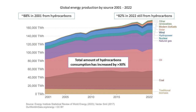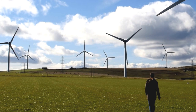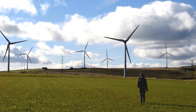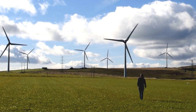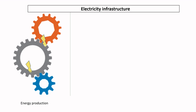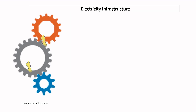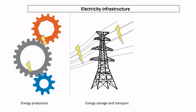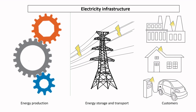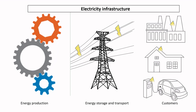Energy transition means moving away from hydrocarbon-based energy production towards lower carbon methods for generating the energy that we all need in our everyday lives. There are three aspects to the electricity infrastructure: energy production, energy storage and transport, and end-user technologies.